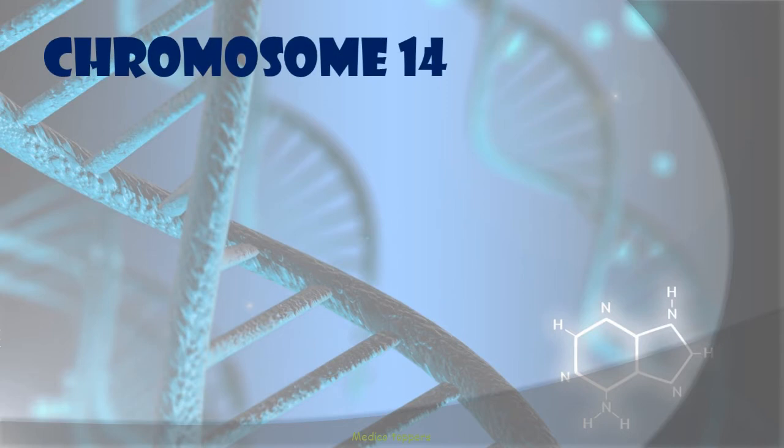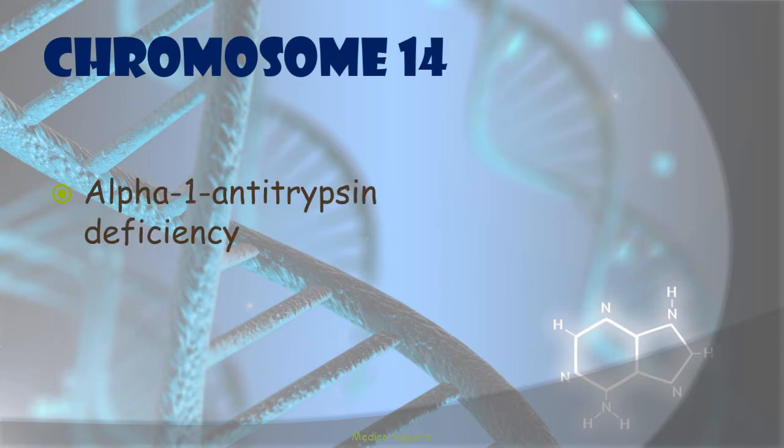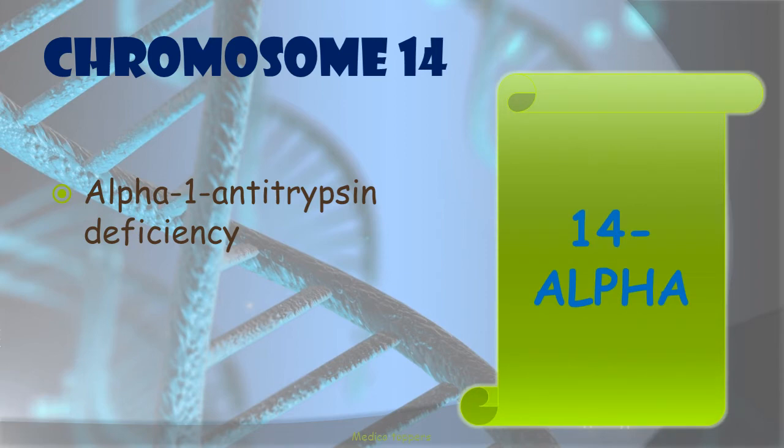Chromosome 14 is associated with alpha-1 antitrypsin deficiency, where we can see panacinar emphysema. There is no particular mnemonic for this one.